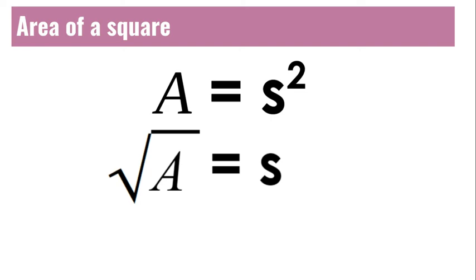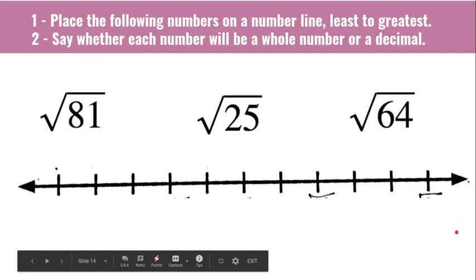So I want you to find the square root of each of these numbers underneath the radical sign. So we say this, the square root of 81. This is the square root of 25, square root of 64. And the directions here are place them on the number line least to greatest.